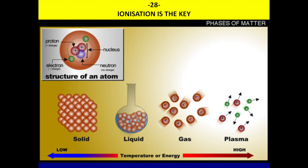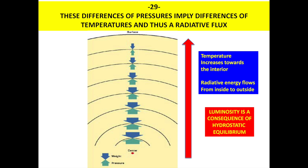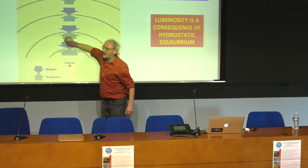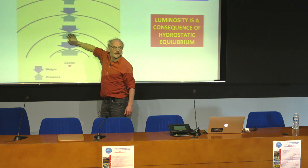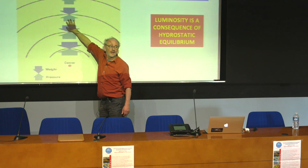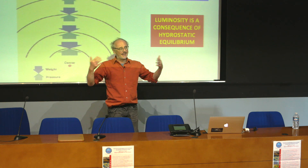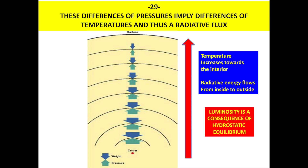In a star, at each point you have a force causing collapse - gravity - and another force, a difference of pressure, which counteracts this collapse. To balance gravity, you need the random movement to be much faster - meaning higher temperature - in the central part of the star than in the outer part. If you have something hot in front of something less hot, you have a flux of energy. So the flux of energy in a star is a mandatory consequence of hydrostatic equilibrium. We can say, in summary, that stars are bright because they are at mechanical equilibrium.